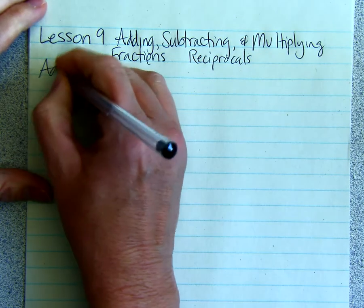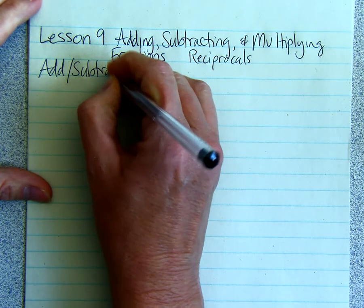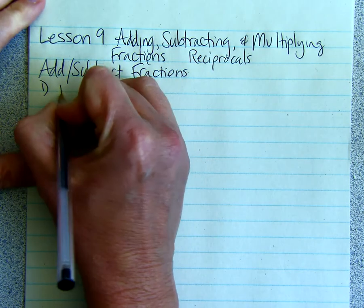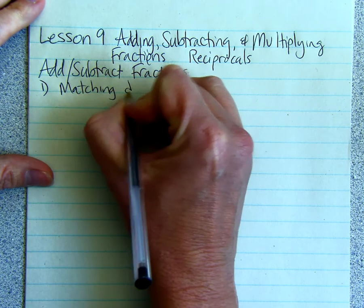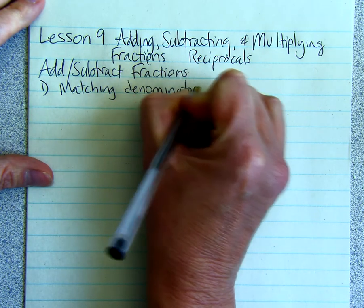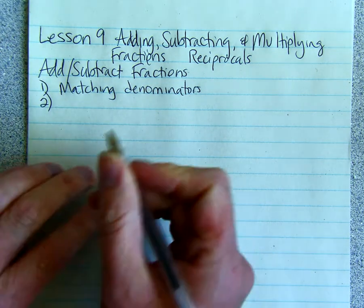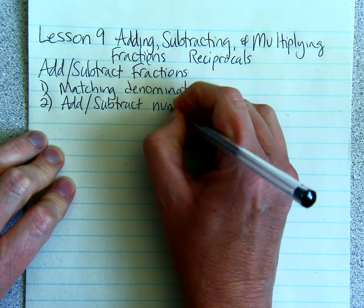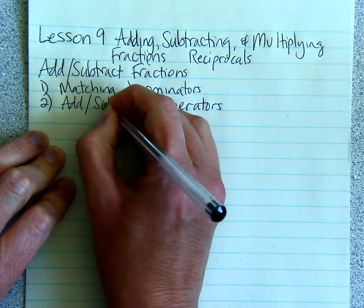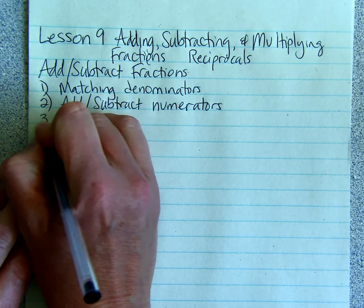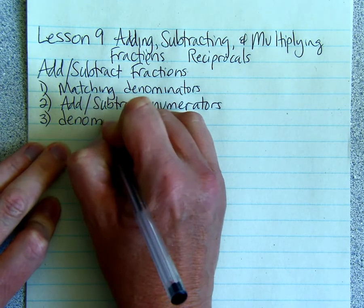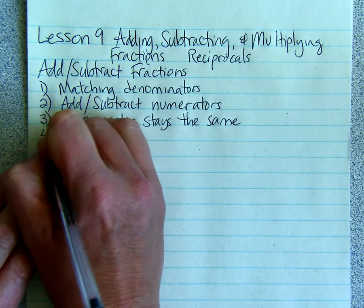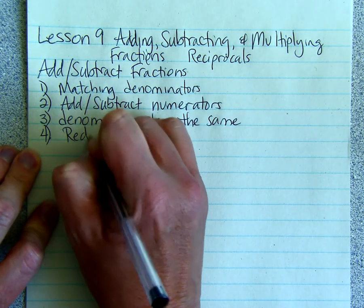When we add or subtract fractions, we have to have matching denominators. Once you have matching denominators, then you can add or subtract the numerators. The denominator stays the same in the answer. And then lastly, you need to reduce if possible.